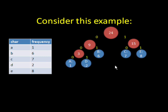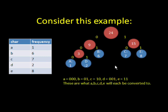So now if you were to follow the tree from the very top to each character, you would get a string of ones and zeros that would create your binary representation. In this case, A would be 000, B would be 01, C would be 10, D would be 001, and E would be 11. These are what A, B, C, D, and E would each be converted to.